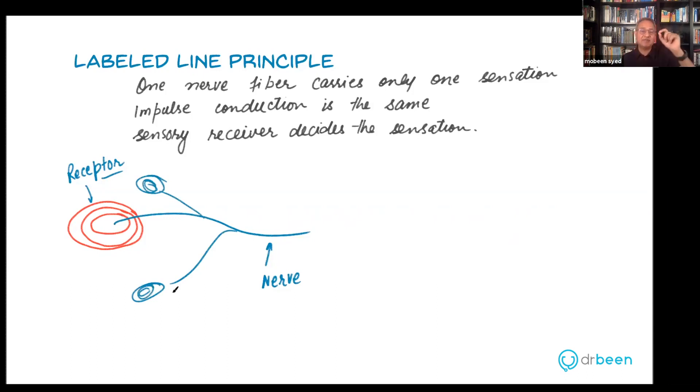But you will never see one nerve where on one end is a Pacinian corpuscle, on the other end is a rod, on the third end is a cone, on the fourth end is a taste bud. That will not happen. One kind of nerve will only take one type of sensation.